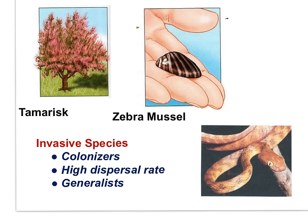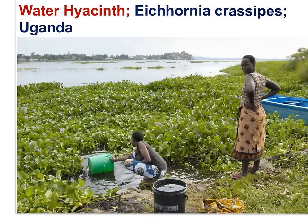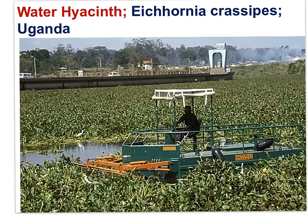Alien species become invasive species because they're colonizers. They have a high dispersal rate and are generalists, well adapted to a broad range of conditions. The zebra mussel was introduced to the Great Lakes of the United States by ships reaching the lakes from overseas. The zebra mussel spread rapidly, clogging the drains of water systems that access the lakes. Water hyacinth, seen here in Uganda, is an alien species that has become invasive. Water hyacinth grows abundantly in the waterways of the world. As a floating plant, it blocks sunlight from reaching depth, blocks shallow bays, and requires removal, as can be seen here.